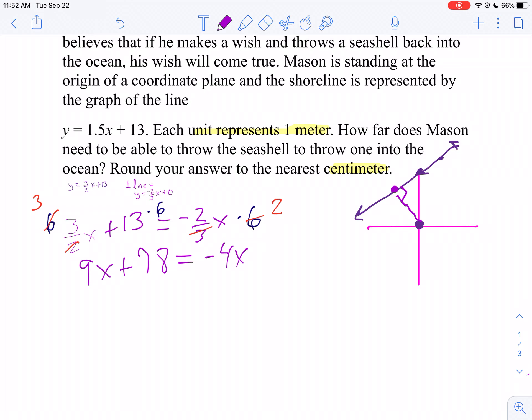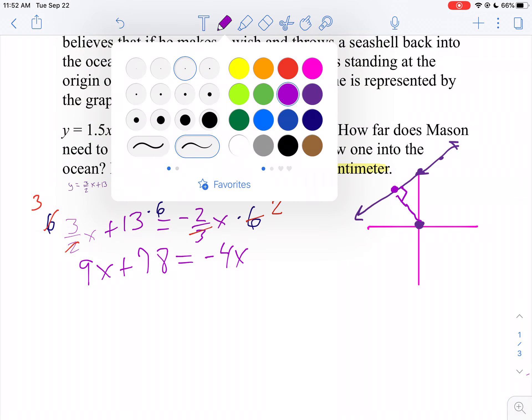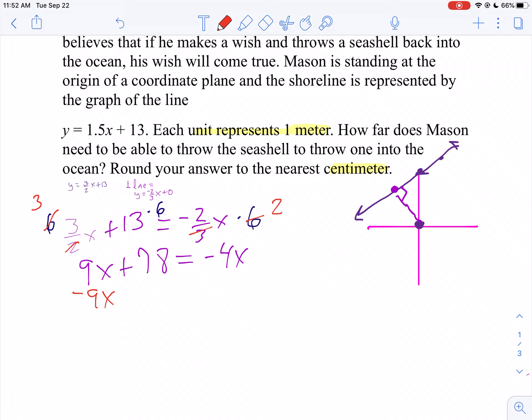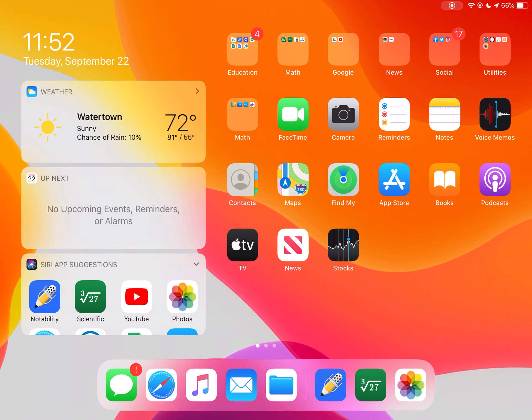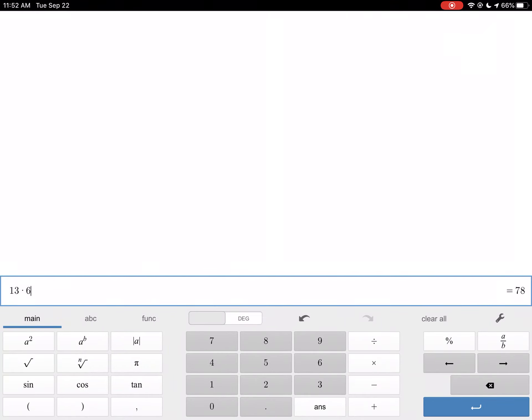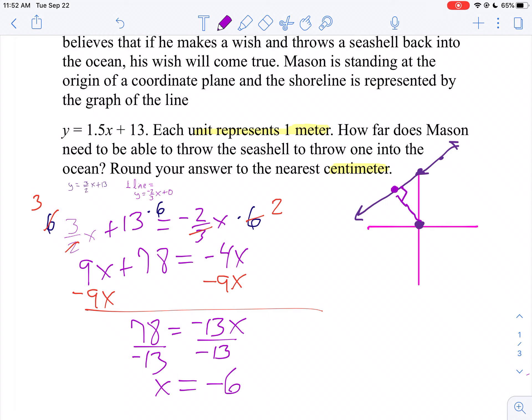Now let's solve for x. Let's get all the x's on one side, so we're going to subtract 9x from both sides. So then we get 78 equals negative 13x. We'll divide both sides by negative 13. I do believe x will be negative 6 there. Let's double check, 78 divided by 13. Yeah, 6. And it should make sense that since you're in the second quadrant, your x-coordinate is going to be negative.